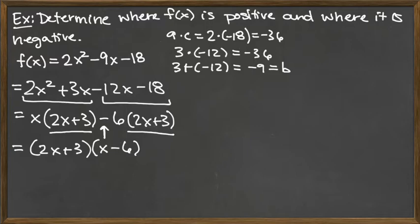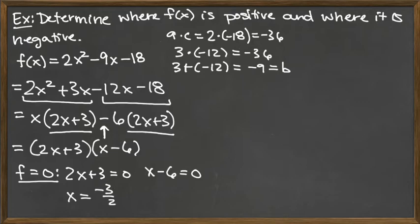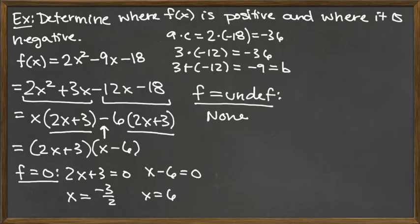We need to know where f of x is equal to 0 and where it's undefined. f equals 0 whenever either factor equals 0. We've got 2x plus 3 equals 0, and x minus 6 equals 0, using the zero product property. That gives us x equals negative 3 halves and x equals 6. We also know f is never undefined. It's a polynomial, defined everywhere. So the only two places we care about are negative 3 halves and 6.